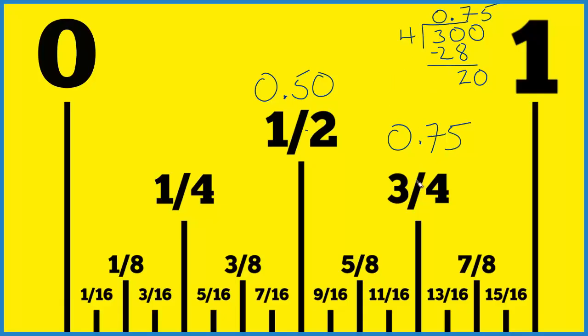So 3/4 as a decimal is 0.75. And that's what we found before.